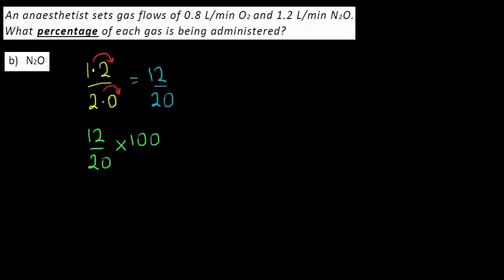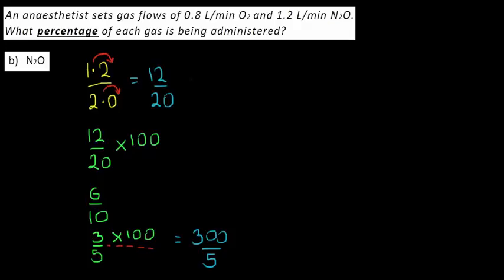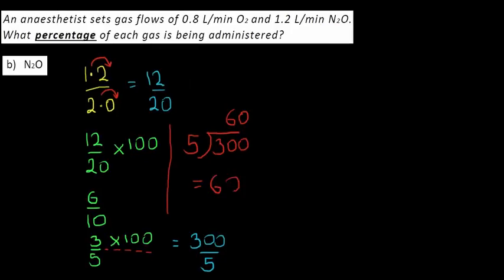As I'm doing this by hand, I'll simplify the fraction first. I can halve top and bottom to get 6 over 10, and halve again to get 3 fifths. So 12 twentieths times 100 has become 3 fifths times 100. Multiplying only the top numbers: 3 times 100 is 300, over 5. The final step is 5 into 300: 5 into 30 is 6, and 5 into 0 is 0, so our final answer is 60 percent.